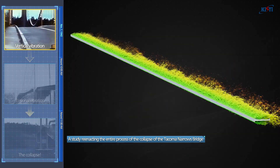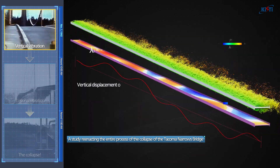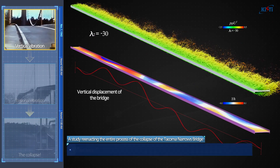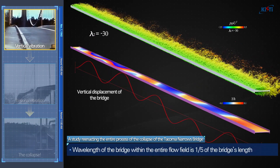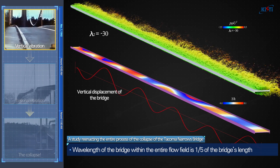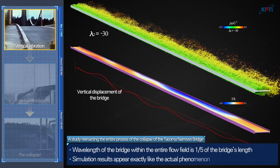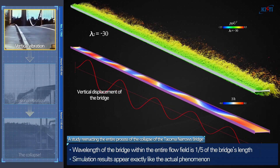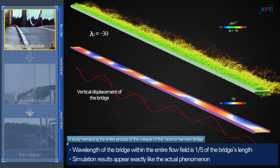We will now separate the flow field and the bridge structure. By doing so, you can see that the wavelength of the bridge within the entire flow field is one-fifth of the bridge's length, and that the simulation results appear exactly like the actual phenomenon.